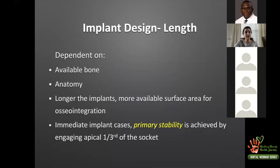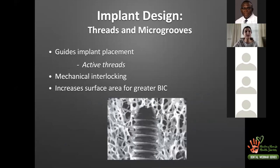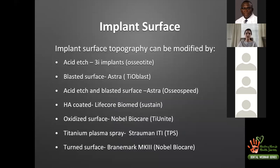Implant length is dependent upon available bone, anatomy (such as the sinus or inferior alveolar nerve), and the need for primary stability. Longer implants provide more surface area for osseointegration. For immediate implant placement cases, primary stability is achieved by engaging the apical one-third of the socket — so longer implants are typically used so the apical portion is wedged into the socket to gain primary stability.